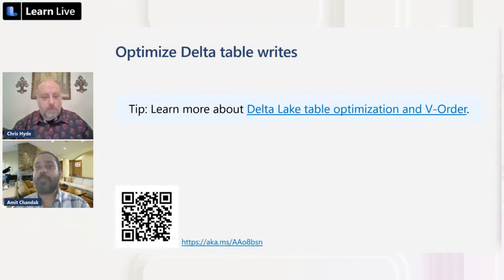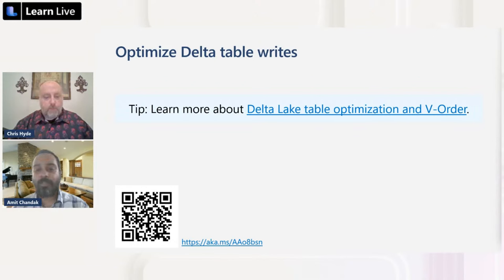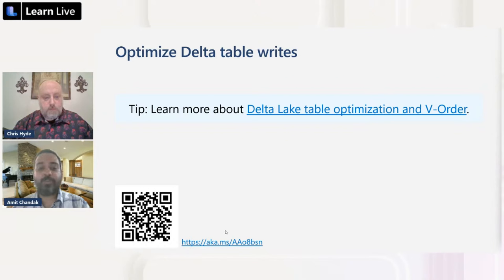You can learn more about optimized delta tables using the 'Delta lake table optimization and V-Order' article - scan the link or go to aka.ms/aao8bsn. This detailed article covers what delta tables are, what delta lake is, and how to optimize the delta format. It's pretty interesting - we're dealing with delta tables using Python.